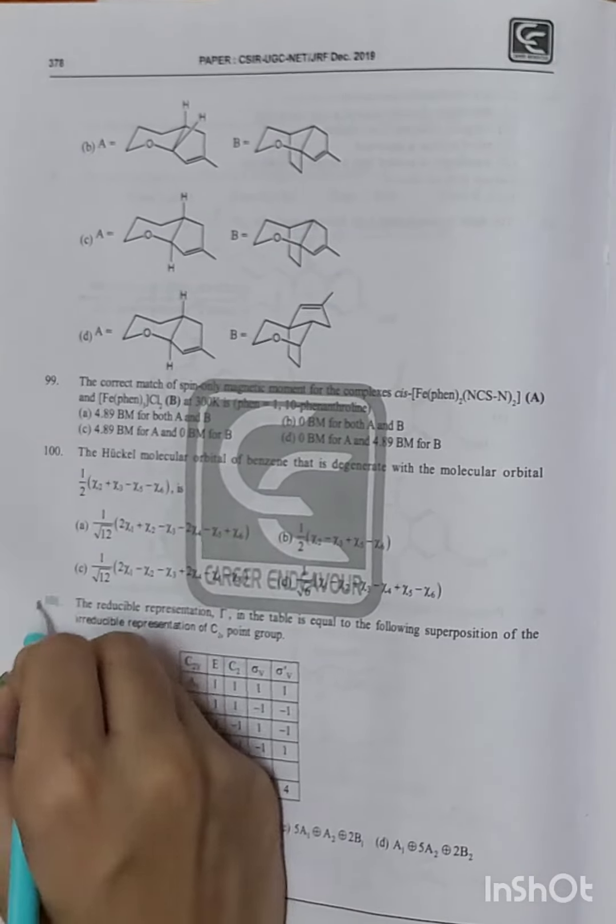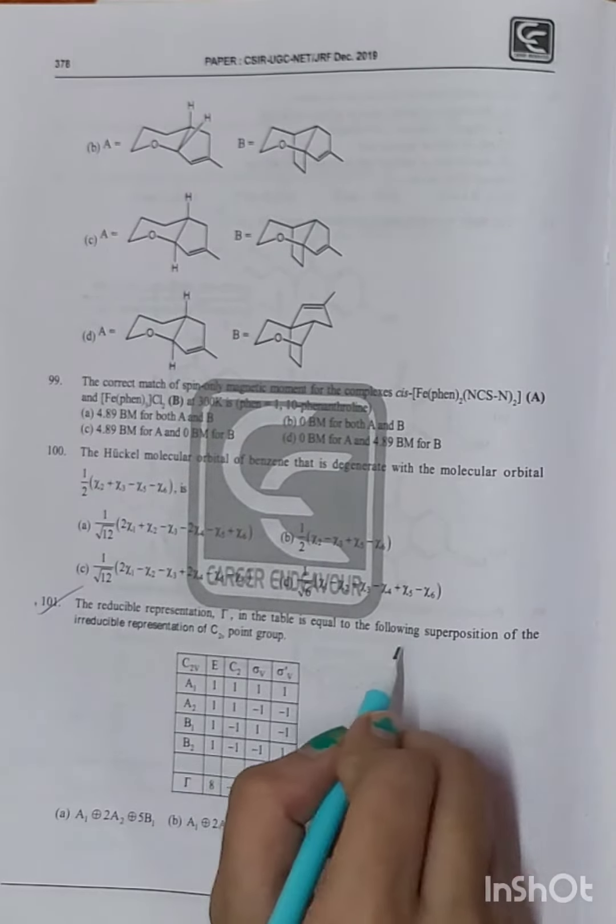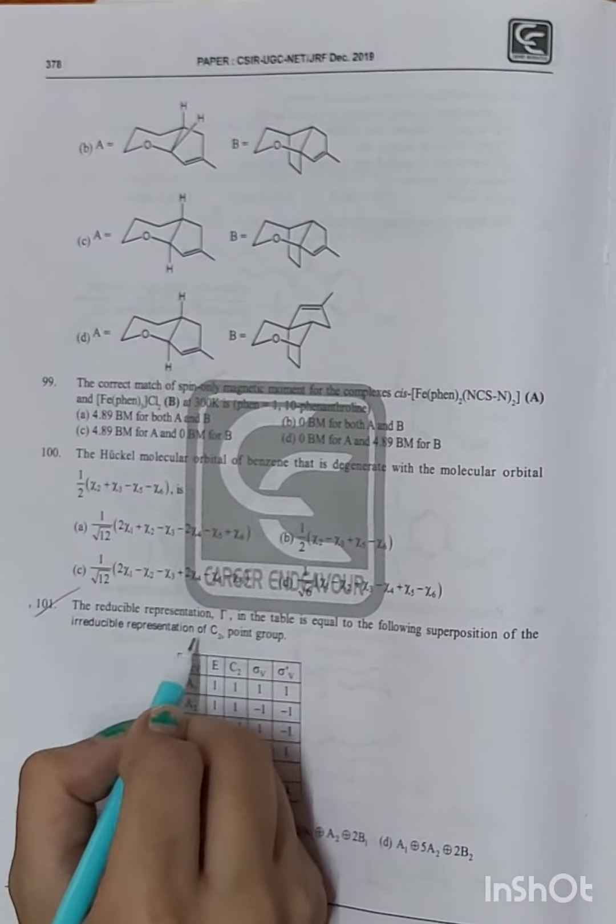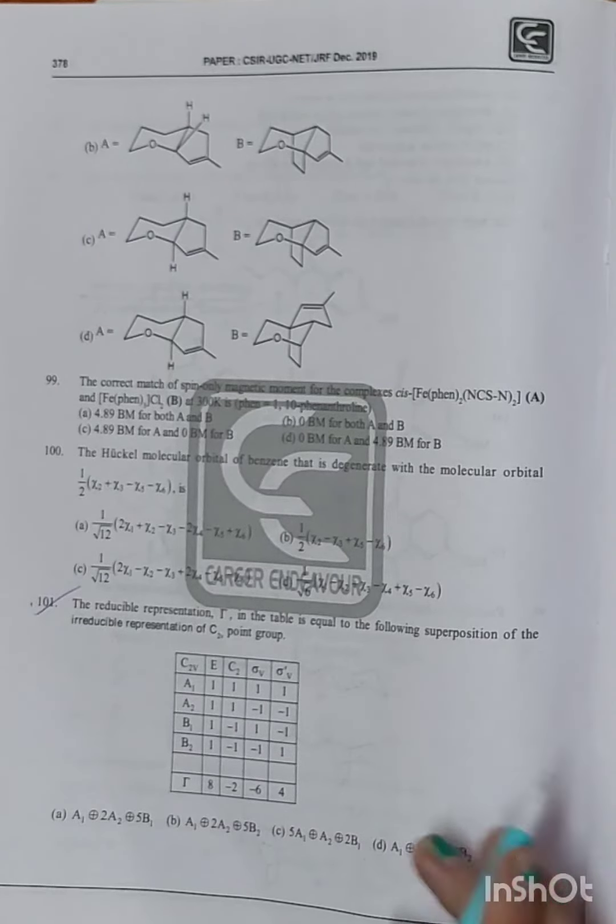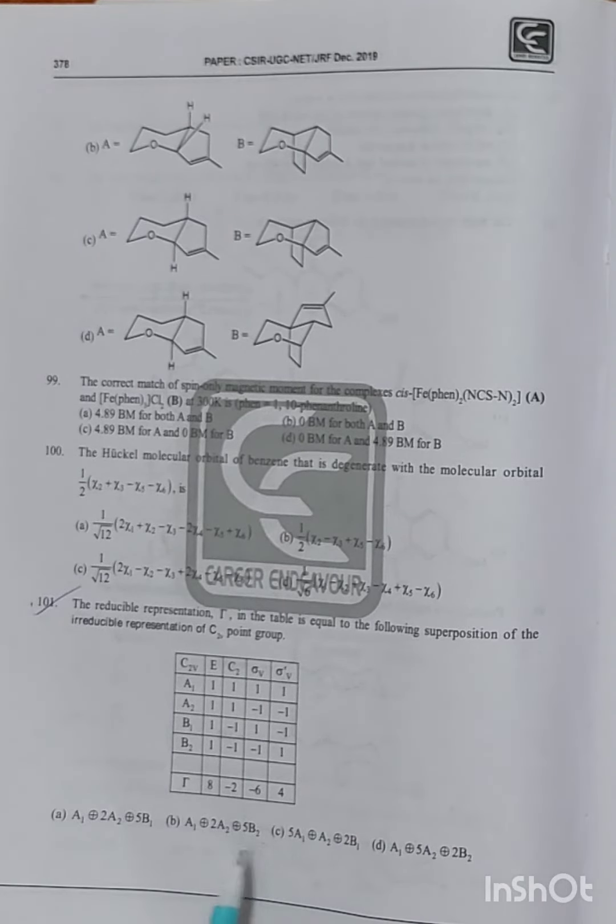Hi guys, we will discuss this question. The reducible representation in the table is equal to the following superposition of the irreducible representation of C2V point group. Look at this option. There are two options, B2 and B1.